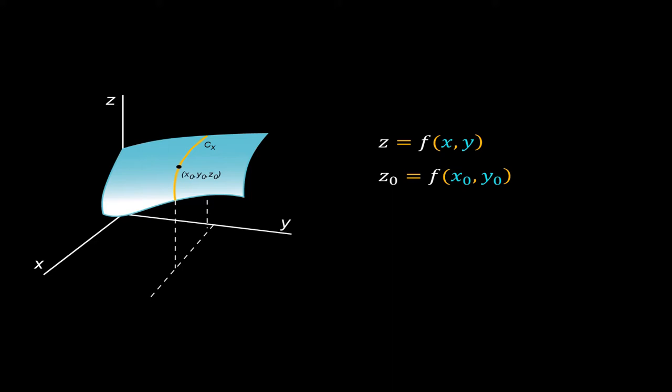I have marked this line as CX. TX is the tangent to this curve at that point X0, Y0, Z0. As Y is constant along this curve, I can easily calculate the slope of this tangent using derivative.